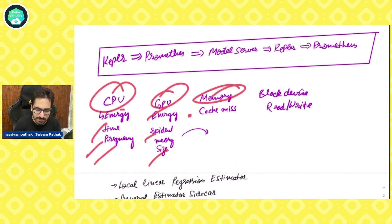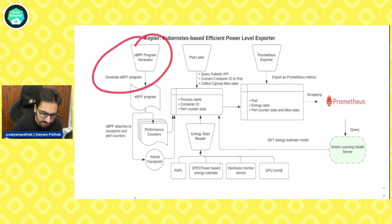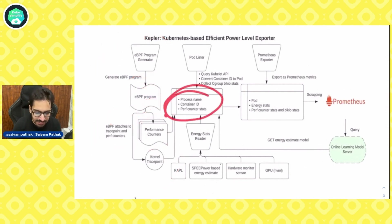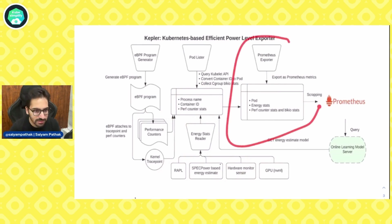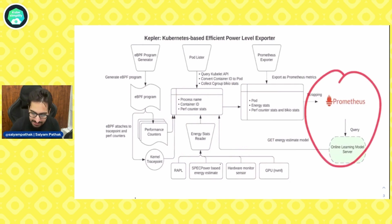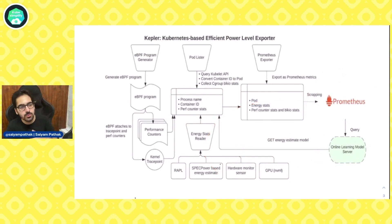For memory you have cache memory and resident memory size. For block devices you have read and write operations. The eBPF programs attach to trace points and perf counters, gathering metrics on performance counters, process names, container IDs, and perf stat counters. The energy stats reader is the aggregation layer with RAPL, hardware monitor sensor, and if GPU-enabled, NVML. Then there is the Prometheus exporter and an online machine learning model server that gets energy estimate models from the Prometheus metrics Kepler provides, and then returns useful metrics.